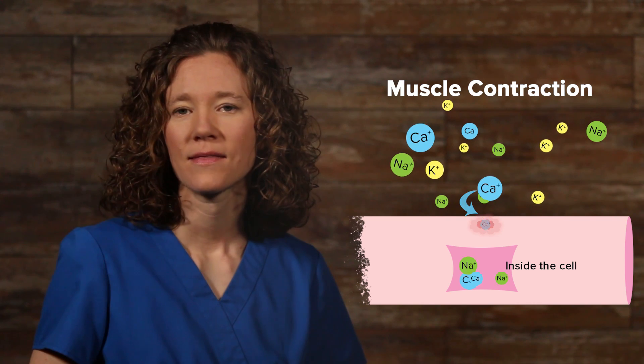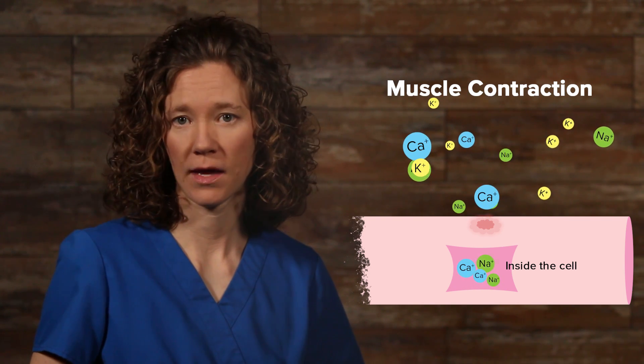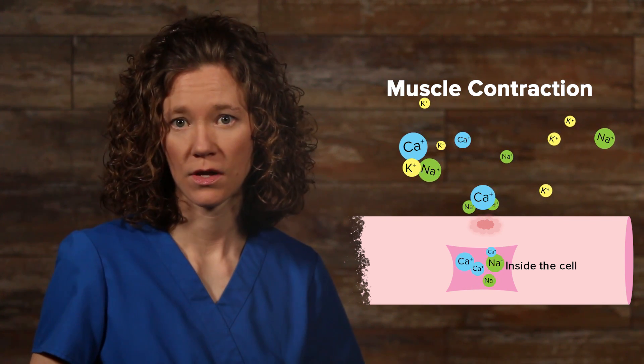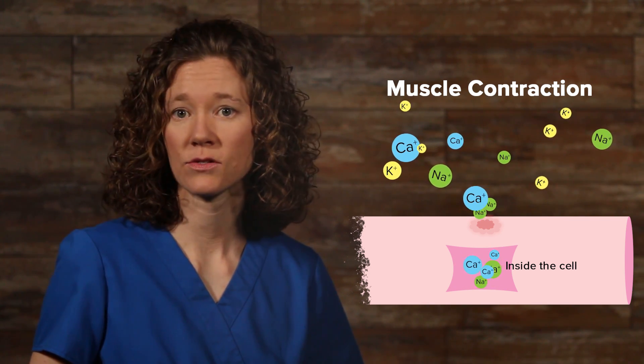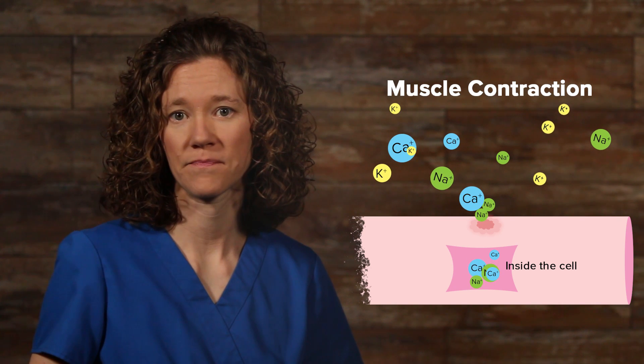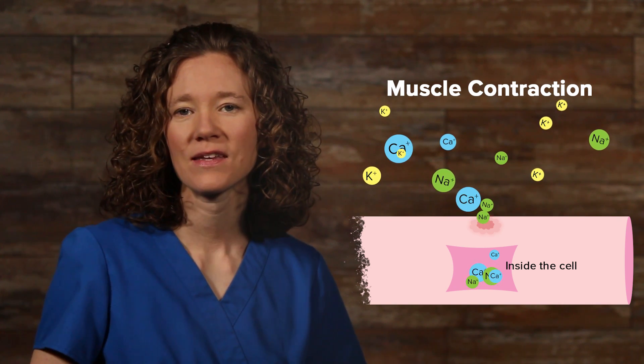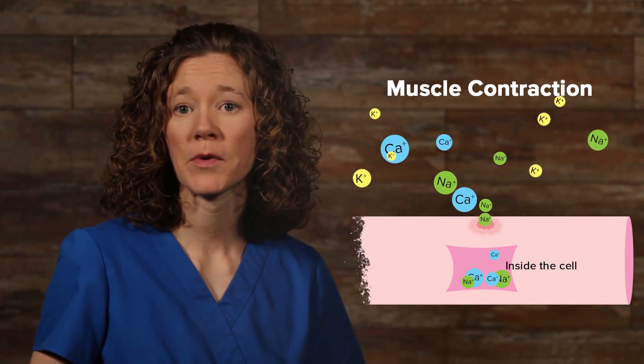The cell membrane contains L-type calcium channels through which calcium ions enter into the cell. These channels are responsible for regulating the entry of calcium into muscle cells, which stimulate vascular smooth muscle contraction.